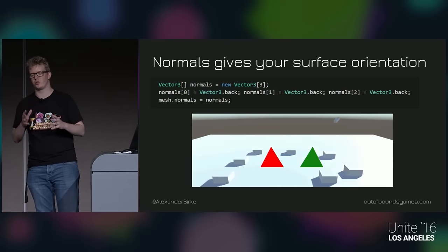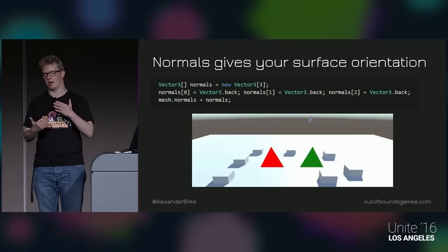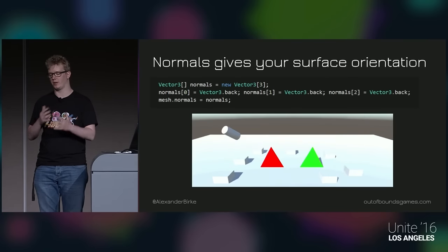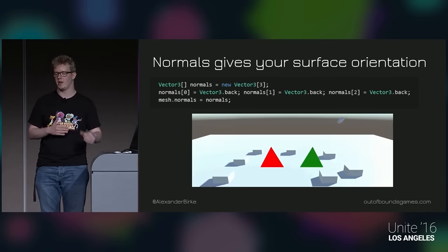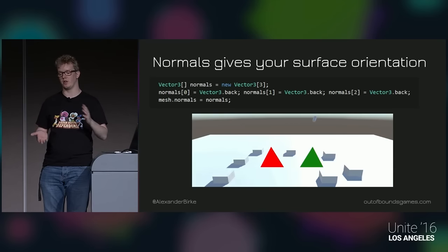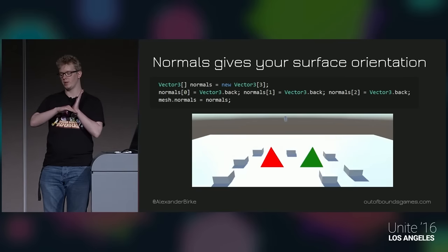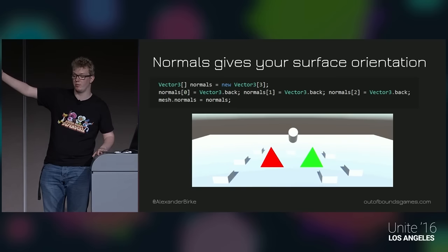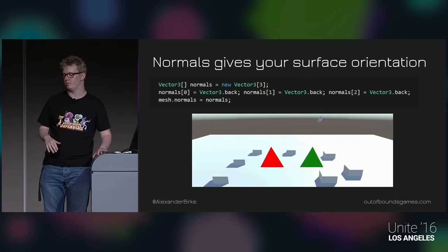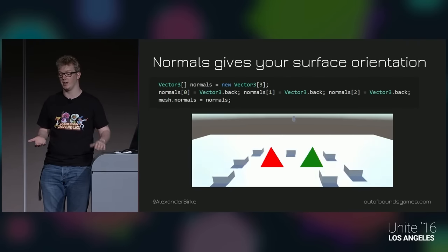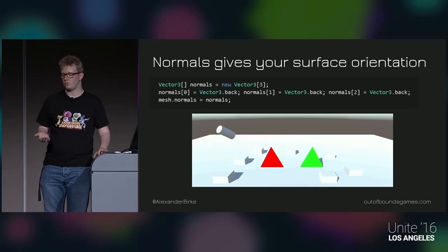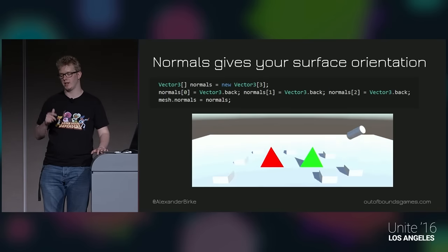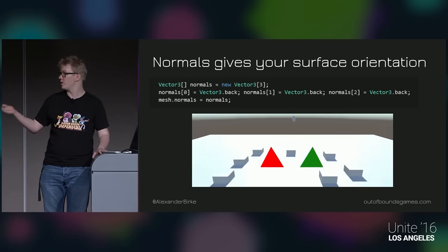If you want your surface to actually react to lighting, it needs to know what direction it's facing, and you use normals for that. It's basically another vector pointing in the normal direction of the surface. As you can see, the triangle without normals and using a colored material that doesn't take lighting information doesn't react to the directional lights, whereas the triangle on the right does.